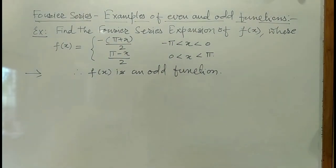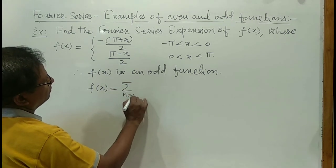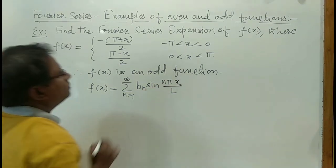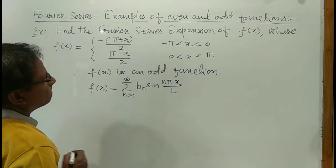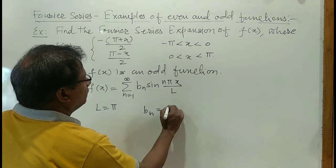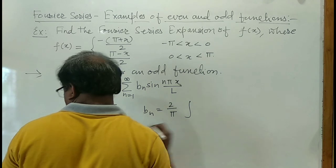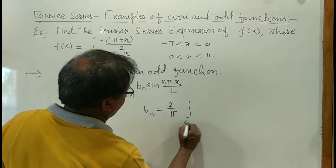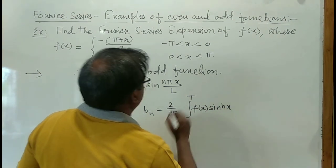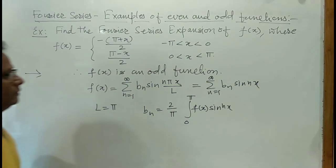The Fourier series of an odd function is given by f(x) equals summation from n equals 1 to infinity of b_n sin(nx). In this example the period is 2pi, so l equals pi. Therefore b_n is given by 2 over pi times the integral, and the series is summation of b_n sin(nx) for n from 1 to infinity.